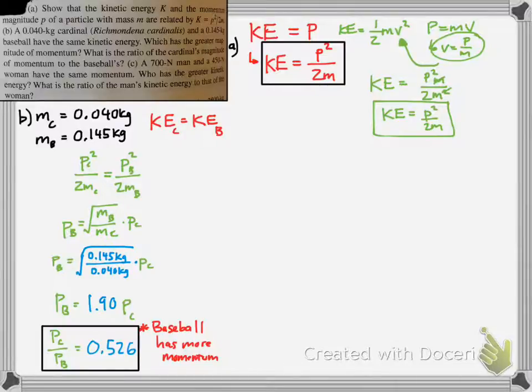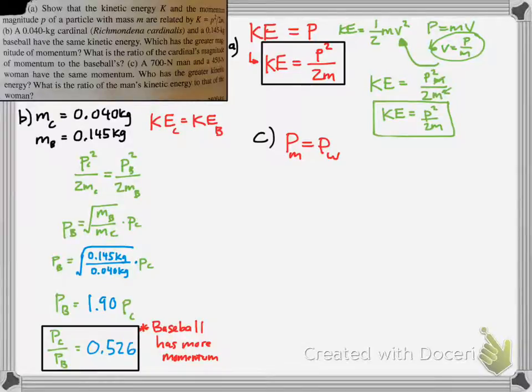Now we'll move on to part C, where you have two people, one man, one woman, different weights, but they have the same momentum. So set the momentums equal to each other. The question is, who has the greater kinetic energy? We're going to use that same formula from part A. Here's the formula we have, and let's solve for momentum p.